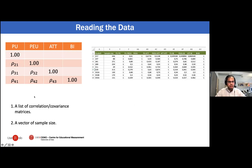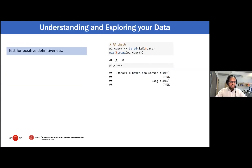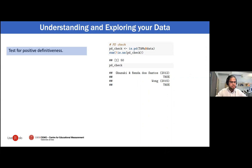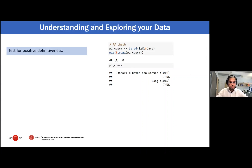There are two things you need to fit a MASEM model: first, a list of correlation or covariance matrices, and second, a vector of sample sizes. Before fitting your MASEM model, you should check for the positive definiteness of the single-study matrices. There are different reasons that can lead to non-positive definite correlation matrices, such as correlation coefficients close to zero, small negative correlations next to positive correlations, or a mismatch between the reported correlation matrices and the model parameters in the primary study.